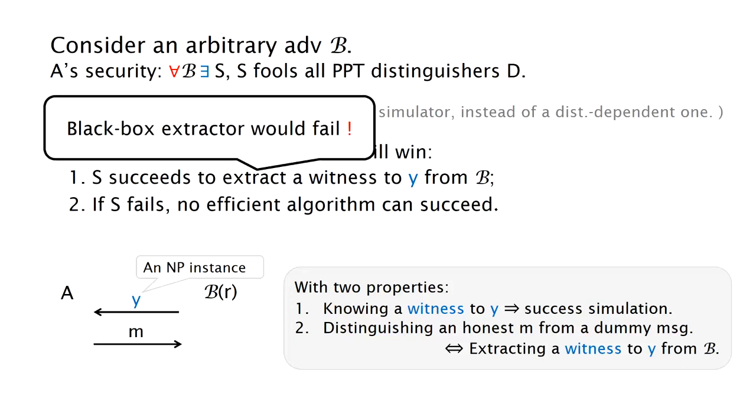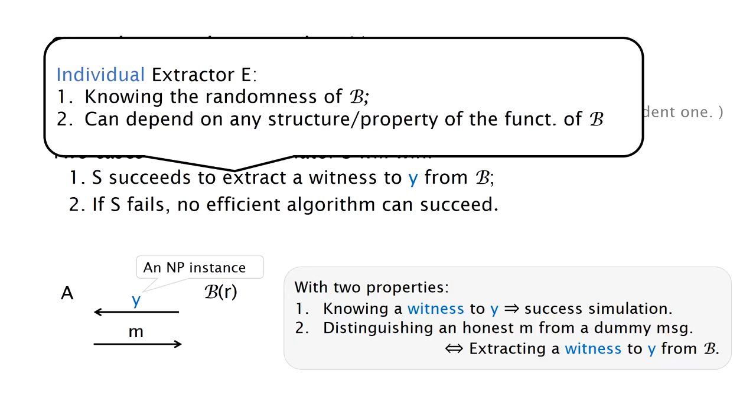And of course the black box extractor would fail in this setting because we cannot extract the witness by rewinding the adversary B. What about the individual extractor? We just mentioned such an extractor knows the randomness of B and can depend on any properties of the functionality of B.